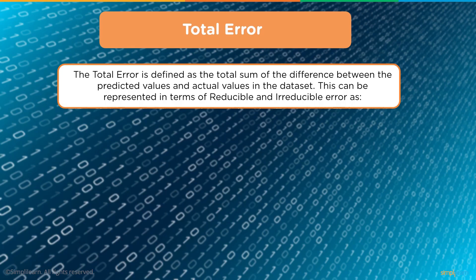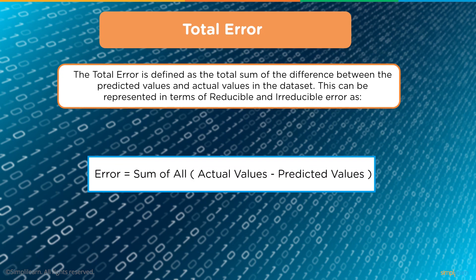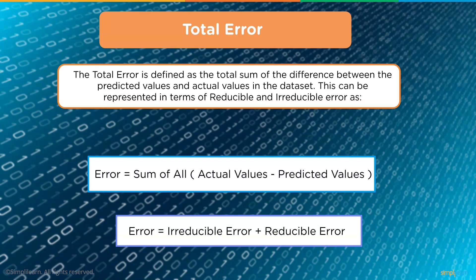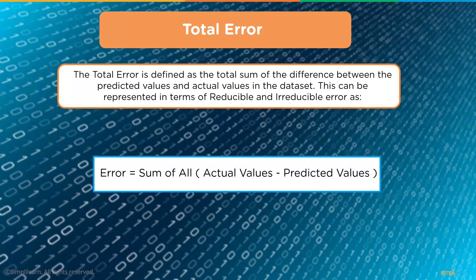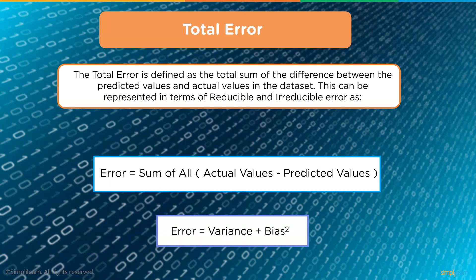Total error is defined as the total sum of the difference between predicted values and actual values in the data set. It equals irreducible error plus reducible error. When presenting to shareholders, the bottom line shows both. Being able to separate where these two parts divide helps a lot in finding a better model and better prediction. Error equals the variance plus the bias squared.